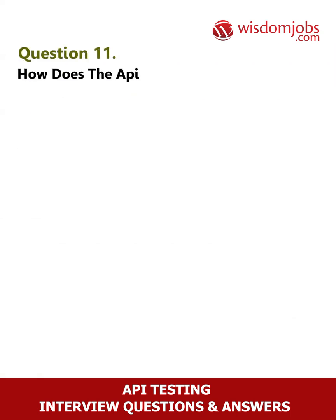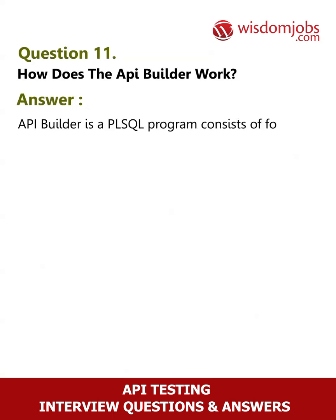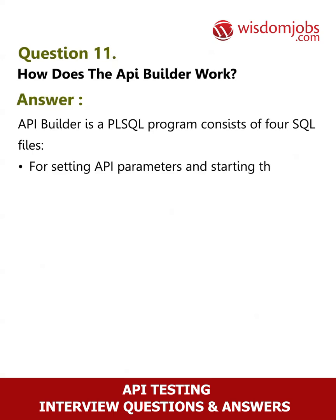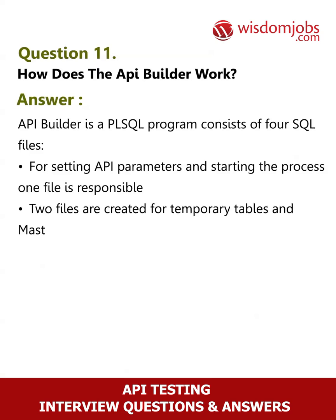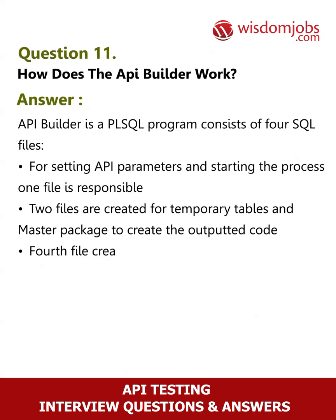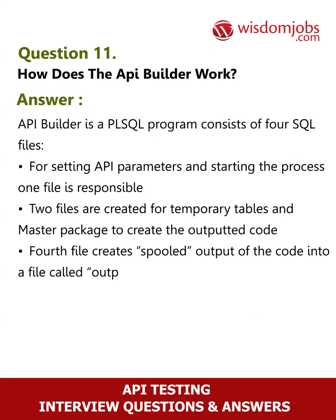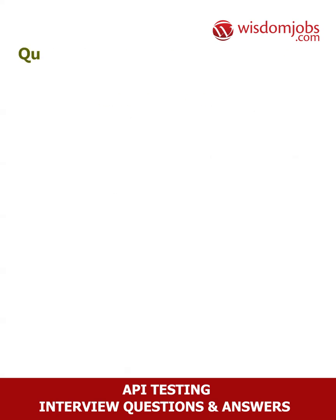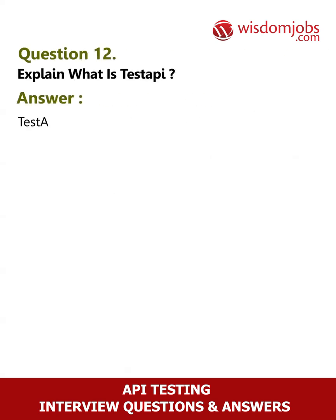Question 11: How does the API builder work? Answer: The API builder is a PL/SQL program consisting of four SQL files for setting API parameters and starting the process. One file is responsible for setup, two files are created for temporary tables and the master package, and the fourth file creates spooled output of the code into a file called output_script.sql.